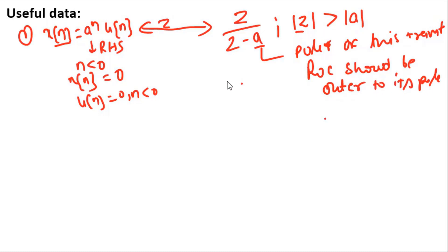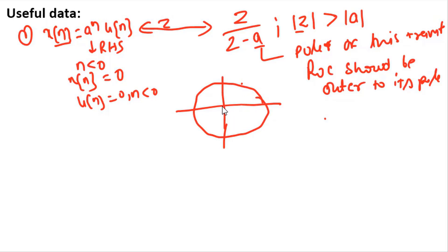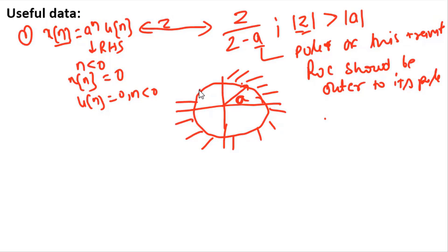In the complex z-plane, you can represent this pole as a circle whose radius equals |a|. The ROC, given by |z| > |a|, is the region outer to that circle — that is, outer to the pole. This outer shaded area represents the ROC of this Z-transform.